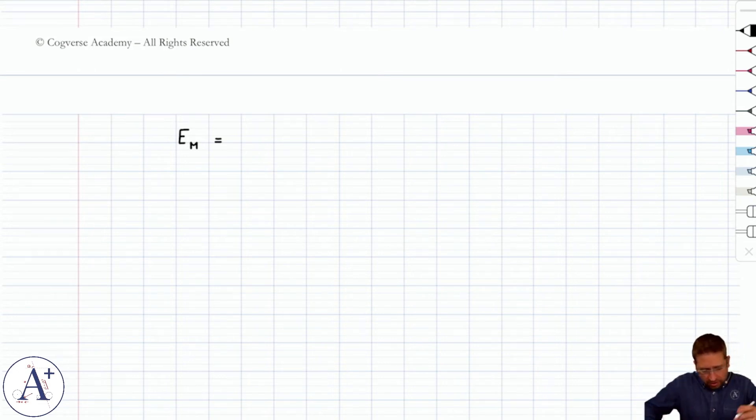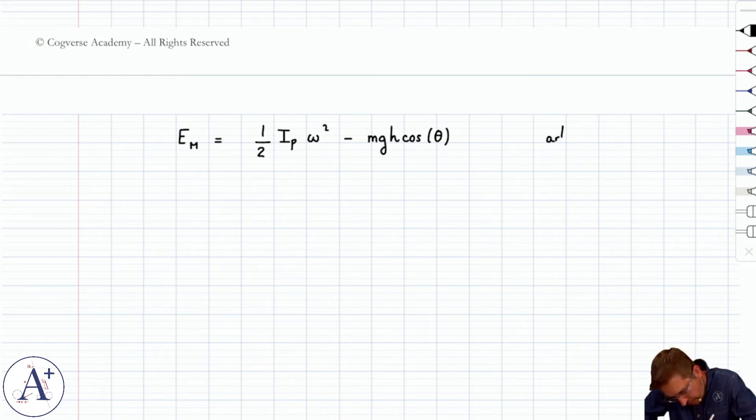And so, if we write mechanical energy at any arbitrary point, we're going to get one-half ip omega squared minus mg h cosine of theta. And so, this is at an arbitrary point and that entire quantity remains constant.